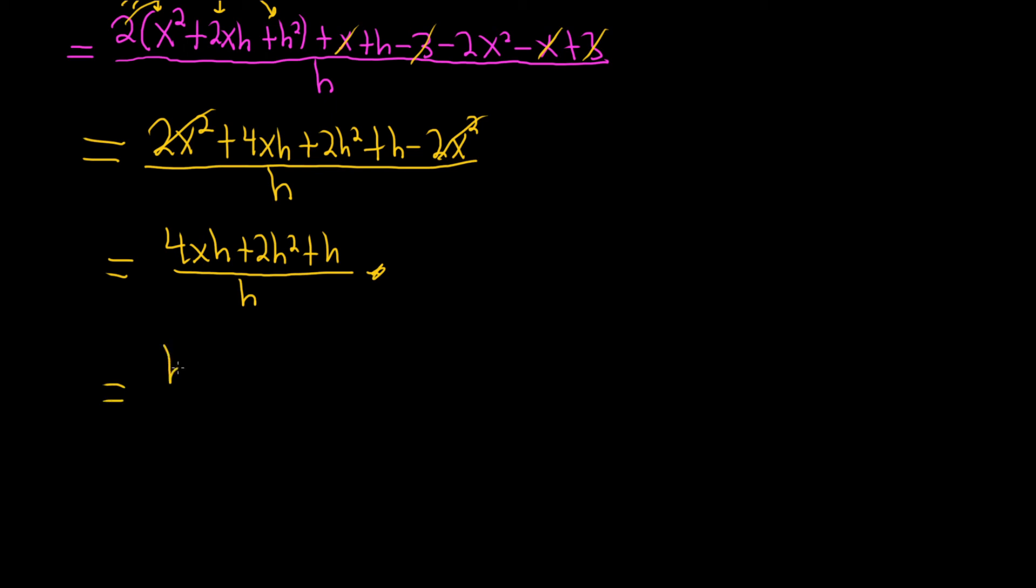So you can factor out an h from the top. So we have h parentheses. It looks like 4x. And then what's missing here? 2h. That'll work, right? h times 2h is 2h squared. h times 4x is 4xh. And then if we want to get an h, we just need a 1. Just a 1 all over h. And so this is equal to 4x plus 2h plus 1. And that would be the final answer.